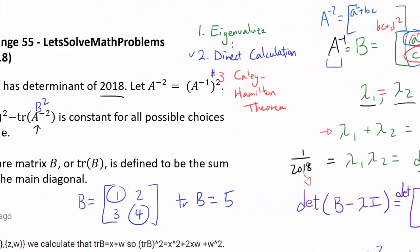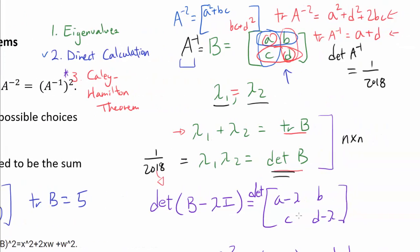You may ask why direct calculation isn't much faster than the eigenvalue method. Well, if you already know that the sum and product of eigenvalues have this intimate relationship with trace and determinant, you can do the eigenvalue method in your head. If you're a master of linear algebra, eigenvalues is actually faster.